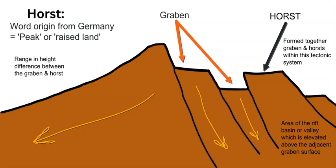The horst is the section of the earth's surface which has not been moved down by gravity or normal faulting, but has instead been squeezed upward. This could be caused by the movement or formation of the graben, or by the resistance, composition, and density of the rock. The word horst has German origin meaning peak — it is a smaller section of the earth's surface that is higher in elevation compared to the graben or the side of the rift valley.